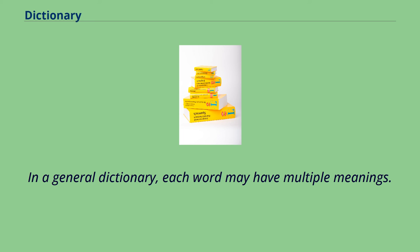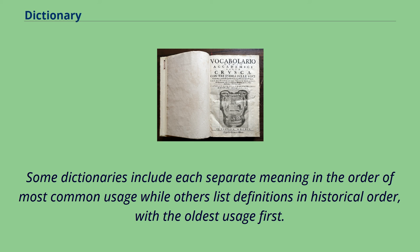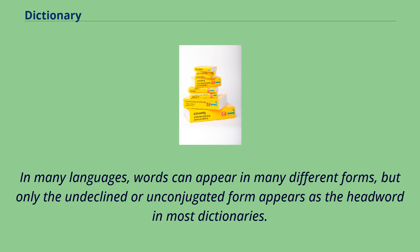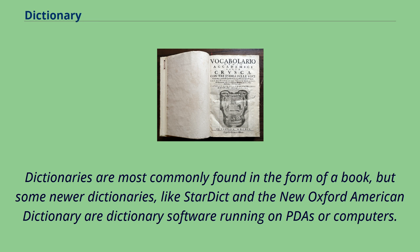In a general dictionary, each word may have multiple meanings. Some dictionaries include each separate meaning in the order of most common usage while others list definitions in historical order, with the oldest usage first. In many languages, words can appear in many different forms, but only the undeclined or unconjugated form appears as the headword in most dictionaries. Dictionaries are most commonly found in the form of a book, but some newer dictionaries like Stardict and the New Oxford American Dictionary are dictionary software running on PDAs or computers.